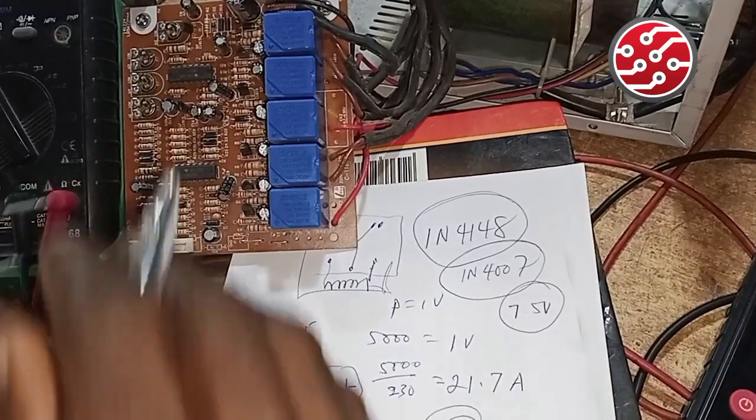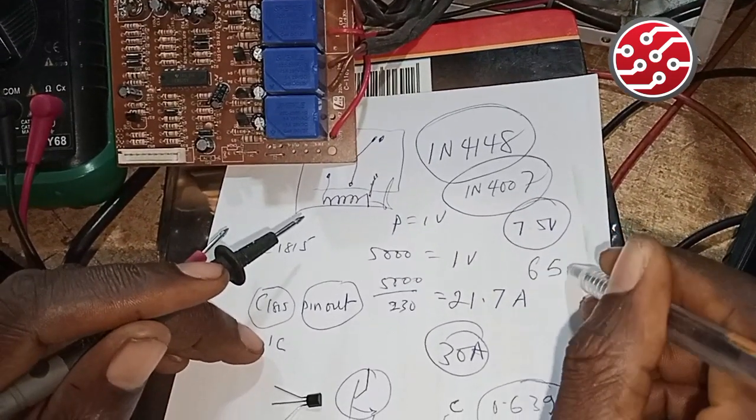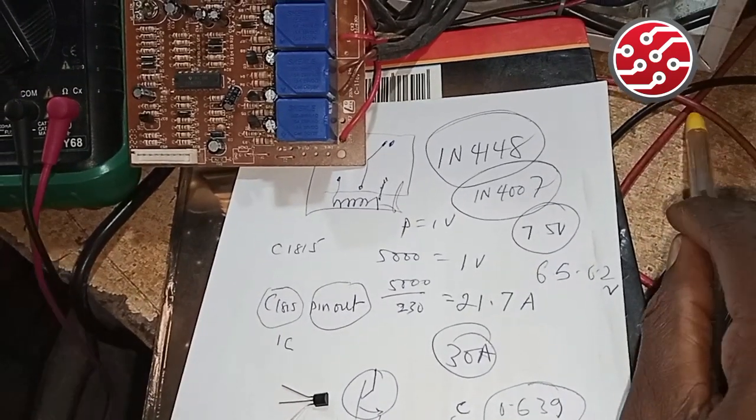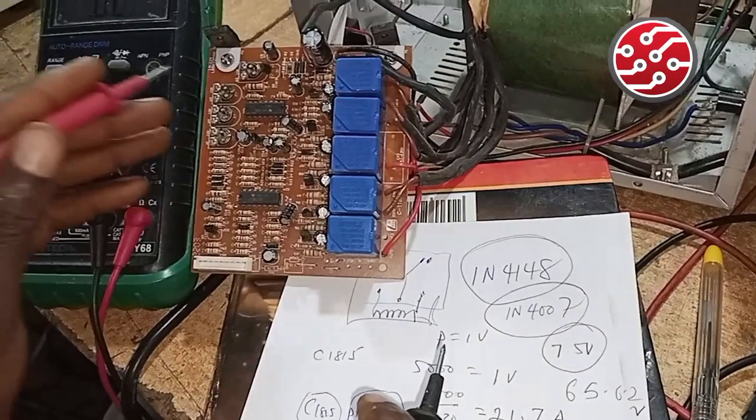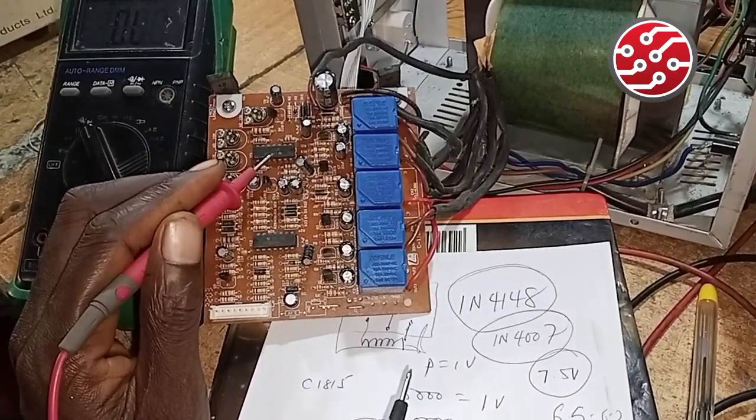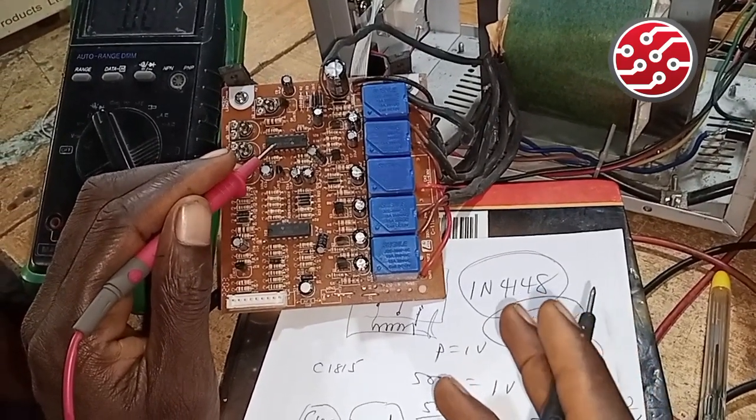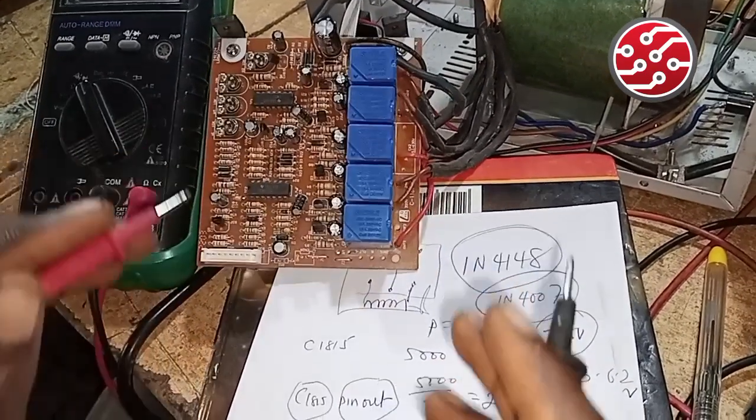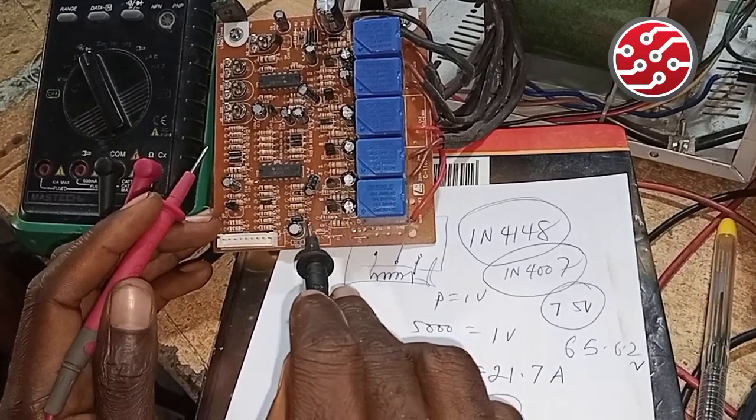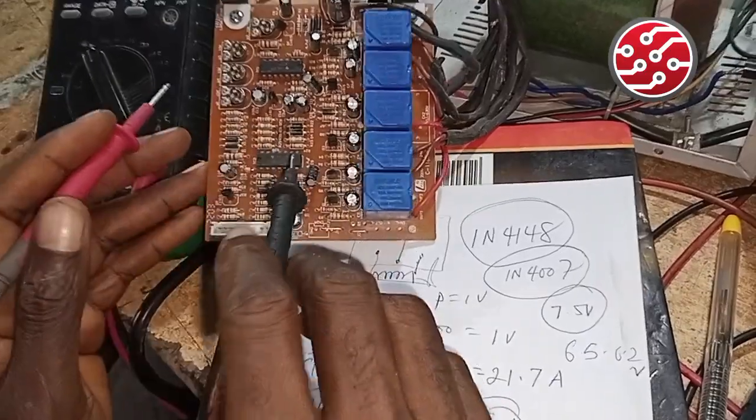Before it passes through the board and gets to the IC, you will be having something like 6.5 to 6.2 volts before it gets to this IC. Now, by tomorrow we go for the IC. I don't want to complex the issue; I don't want to rush it. I just want to be going gradually. We are done with relay, we are done with transistor, we are done with diode, we are done with resistor. Tomorrow I'm going to focus on the IC and variable resistor.